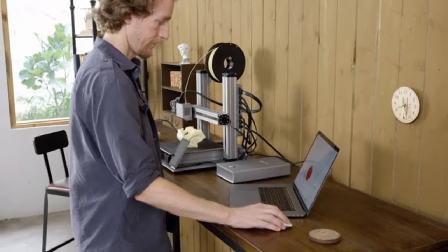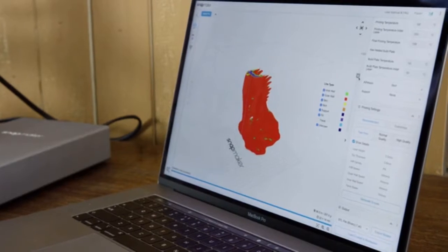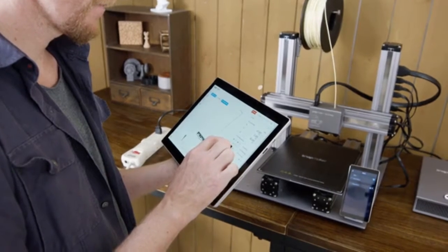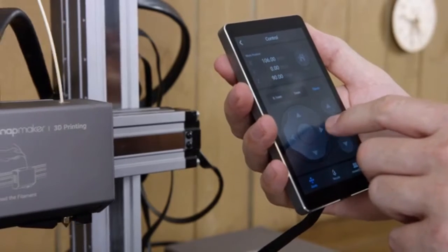Our software has greatly simplified the process of 3D printing, laser engraving, and CNC carving. You can also connect and control your Snapmaker via Wi-Fi or with the smart touch screen.